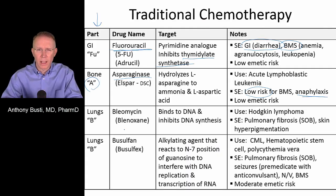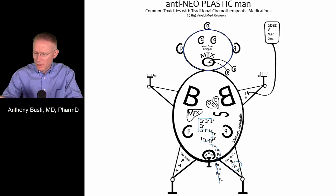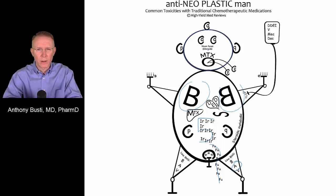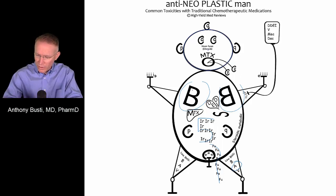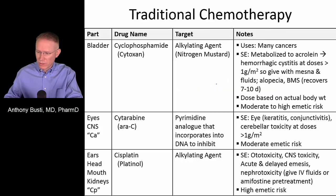Bleomycin binds to DNA and inhibits DNA synthesis. One of the things we see with it, similar to busulfan, is the risk of pulmonary fibrosis. These patients end up developing shortness of breath. When you look in the lungs on antineoplastic man, we have the Bs reflecting both drugs. If you think about the anatomical characteristics of the lungs with multiple lobes, we see multiple lobe-like structures with the Bs to indicate that both bleomycin and busulfan cause pulmonary fibrosis.